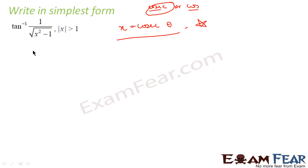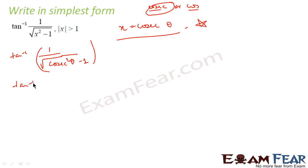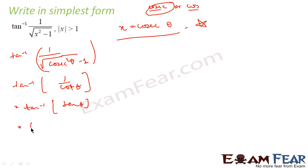So since the question is to simplify, we take x equal to cos theta. This becomes tan inverse of cos squared theta minus 1. Cos squared theta minus 1 is 1 by cot theta, so this is tan inverse of tan theta, which is nothing but theta. Since x equals cos theta, theta is cos inverse of x, and that is the simplified form of tan inverse of 1 minus root of x squared minus 1.